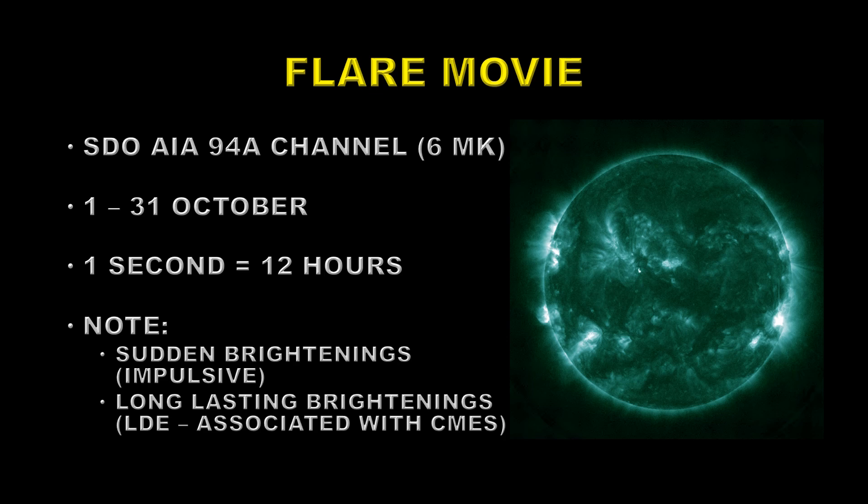Let's take a look at the flare movie for this month. This is in the 94 angstrom channel, which corresponds to about 6 million degrees. Again, one second is about 12 hours. Look for sudden brightenings — those are impulsive flares — and then long-lasting brightenings, which are long duration events usually associated with CMEs.